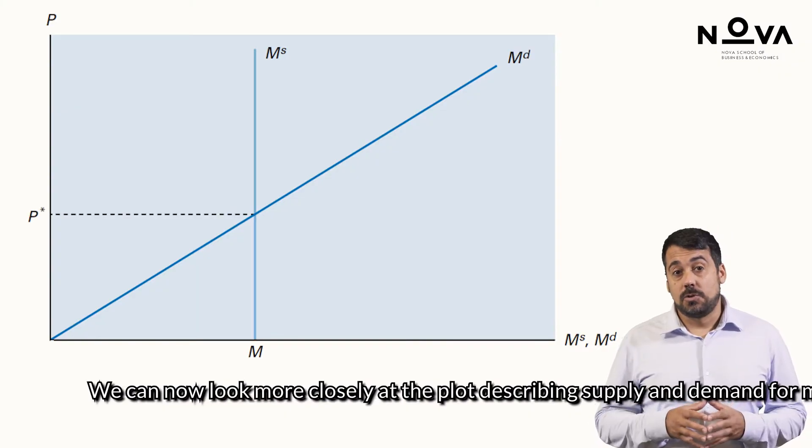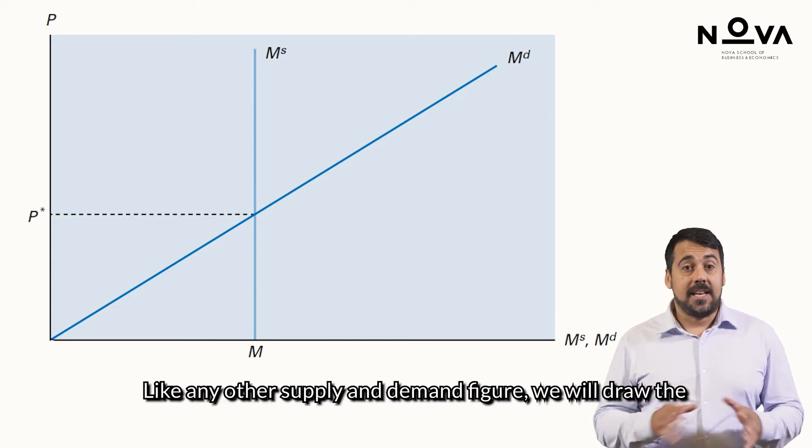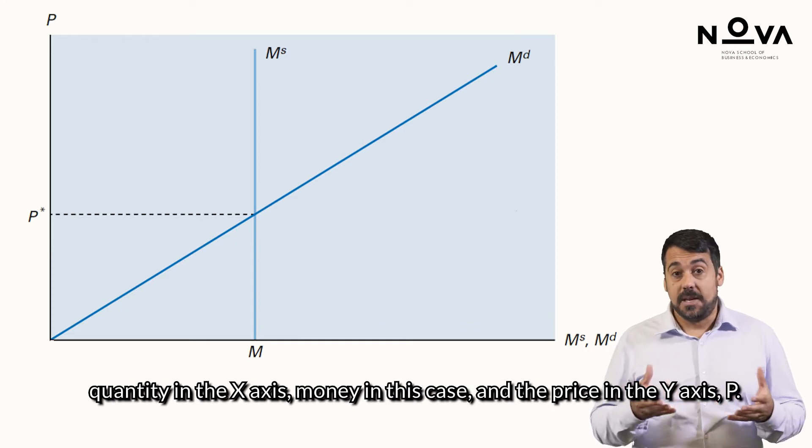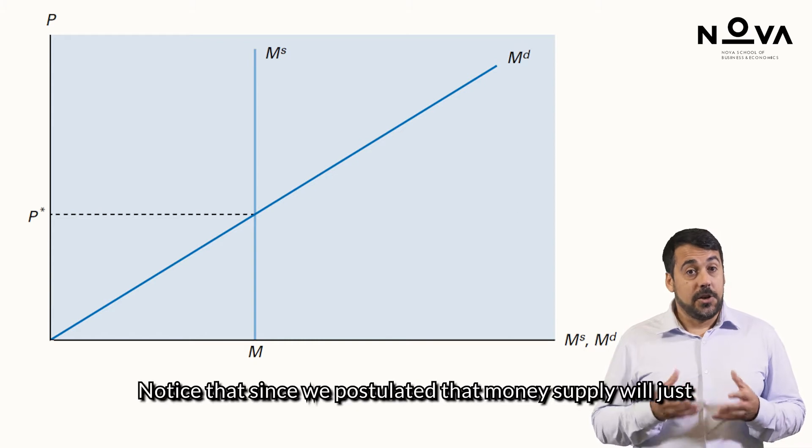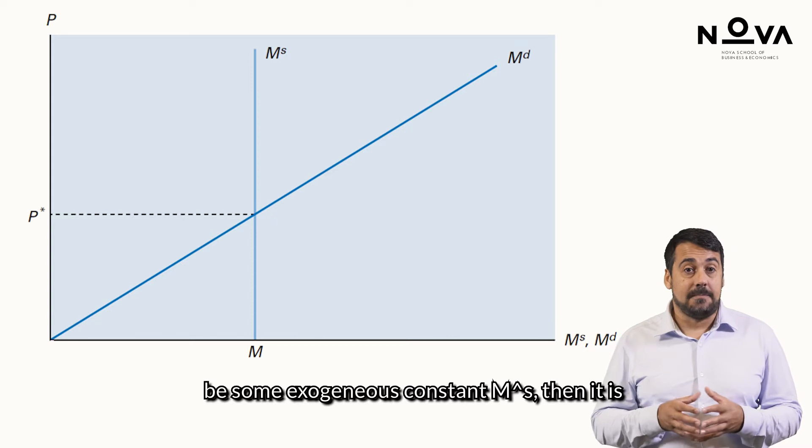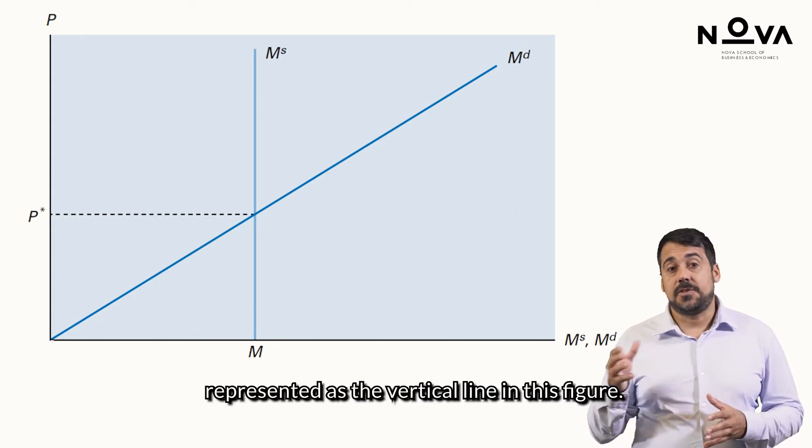We can now look more closely at the plot describing supply and demand for money. Like any other supply and demand figure, we will draw the quantity in the x-axis, money in this case, and the price in the y-axis, P. Notice that since we postulated that money supply will just be some exogenous constant M superscript S, then it is represented as the vertical line in this figure.